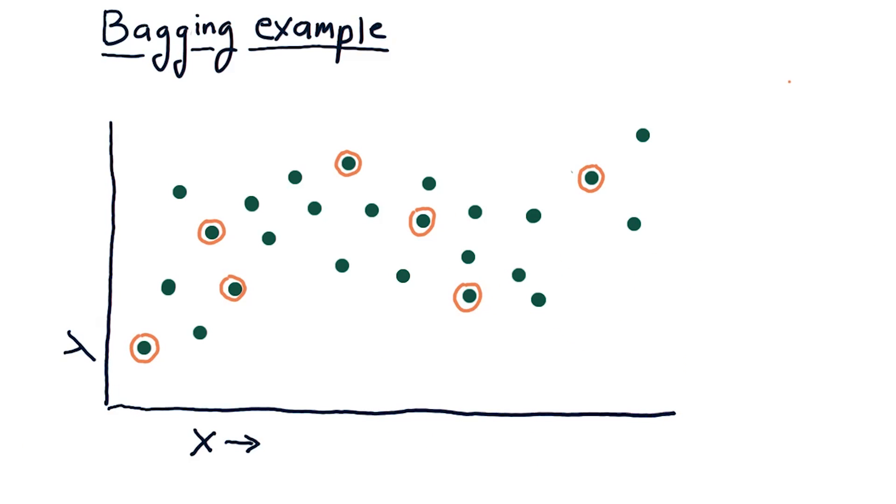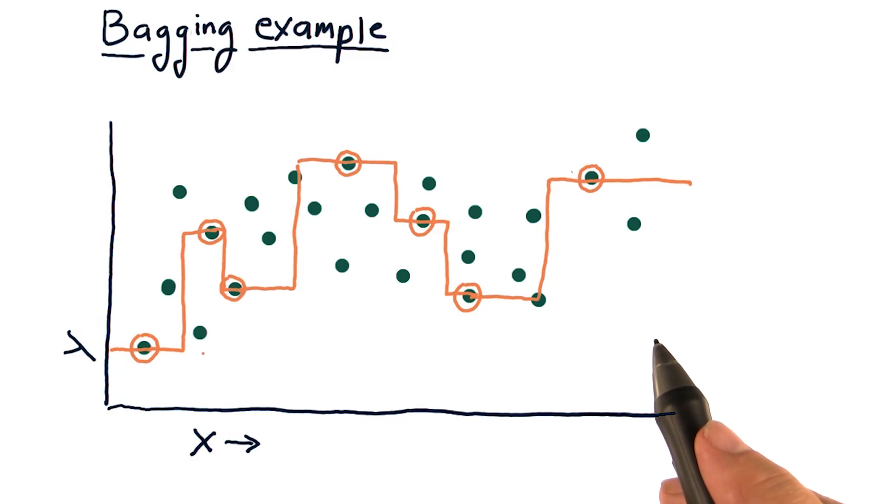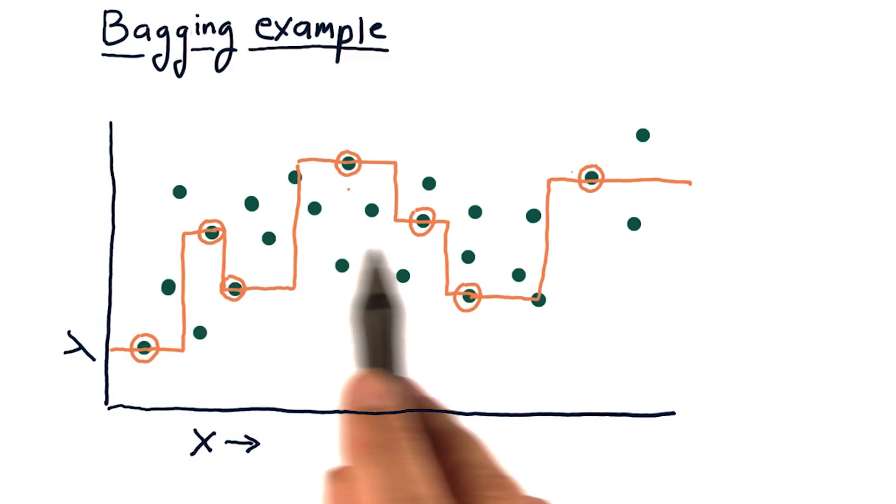So we randomly selected some of these points. Now let's show what that model looks like. So this zigzagging orange line here represents what that one nearest neighbor model would look like, and yes, to me, it looks like it's overfitting. But that's just our first model.